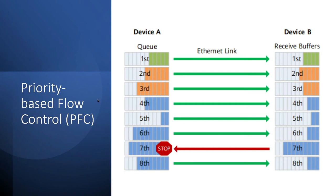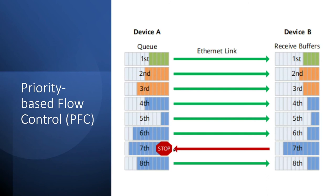Next, I'll introduce some existing flow control algorithms used by RoCEv2 today. The first one is PFC — Priority-based Flow Control. PFC defines eight virtual channels inside a physical Ethernet link. For example, in this picture, if the 7th virtual channel of the sender sends too much data to its downstream, the receiver finds its 7th channel buffer is almost full. Then the downstream 7th channel sends a stop message to its upstream. This stop message is called a PFC frame. Once the sender's 7th virtual channel receives the PFC frame, it will stop sending any more packets.